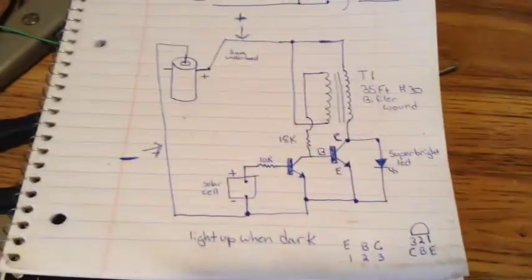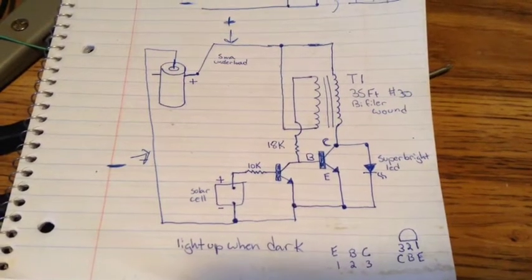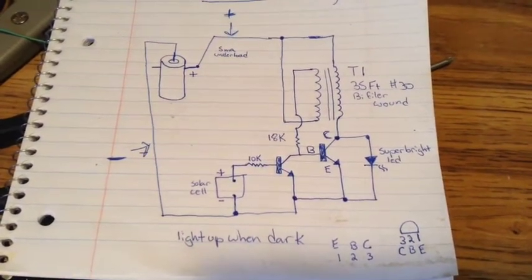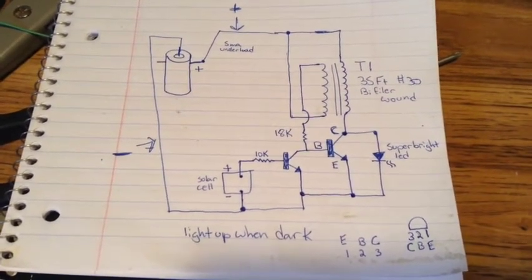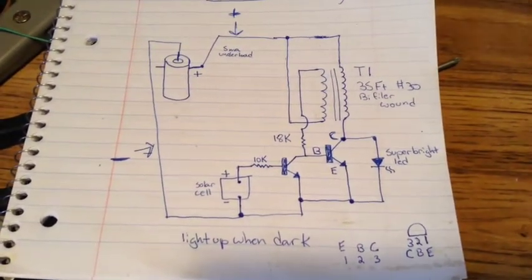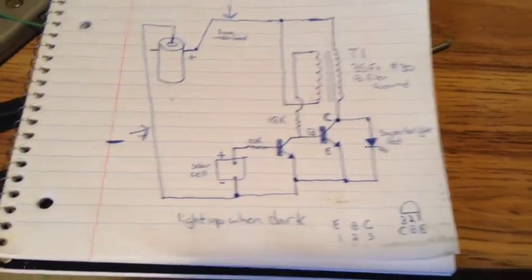Here is a diagram of that circuit using the two N222 transistors. Now in Bendini's circuit, it called for an 18K on the base of the one transistor and then a 10K on the base of the second transistor to the positive of the solar panel.